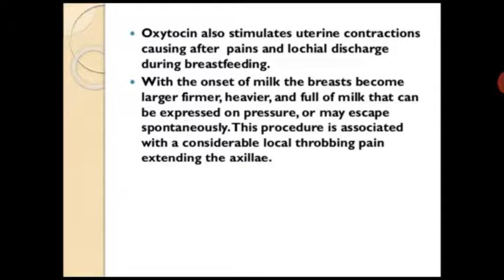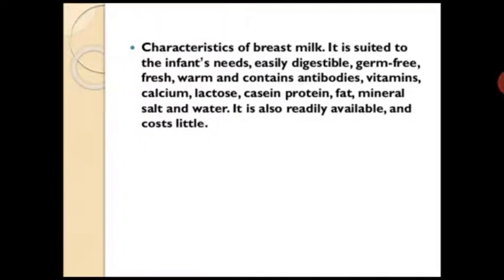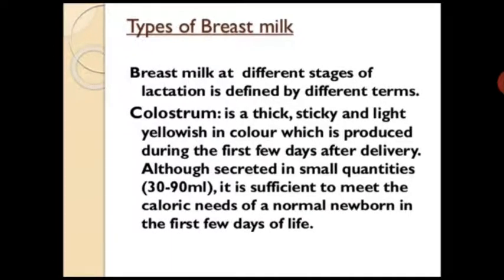Oxytocin causes after pains and local discharge. During the first feeding, with the onset of milk, the breast becomes larger, firmer, heavier, and full of milk that can be expressed on pressure or may escape spontaneously. This engorgement is associated with considerable local throbbing pain and extending to the axilla. Characteristics of breast milk: it is suited to the infant's needs, easily digestible, germ-free, fresh, warm, and contains antibodies, vitamins, calcium, lactose, casein, protein, fat, mineral salts, and water. It is readily available and costs little. Types of breast milk are defined at different stages of lactation.